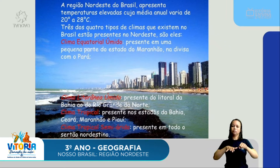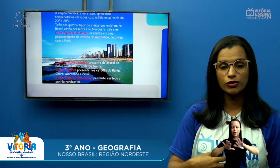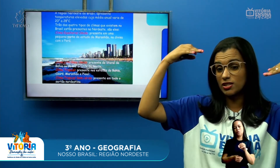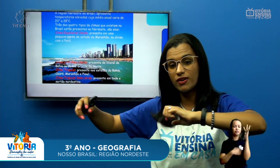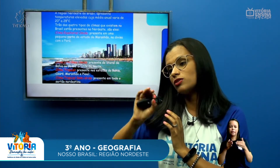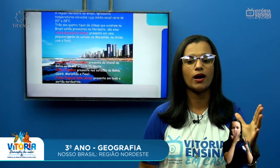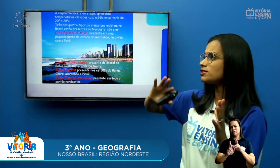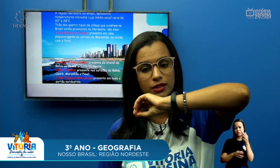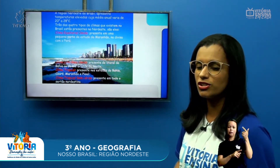Temos aquele clima litorâneo úmido porque está perto do litoral. Tudo que fica perto do litoral é mais úmido. A vegetação é mais alta, tem aquela floresta mais vasta. Depois vai diminuindo, ou seja, o clima já vai mudando até chegar no sertão, que é um outro tipo de vegetação. Tudo é de acordo com o clima daquele local. Se você for lá no sertão de Pernambuco, as plantas de lá são diferentes das plantas daqui da zona da mata, porque o clima diferencia esse tipo de vegetação.